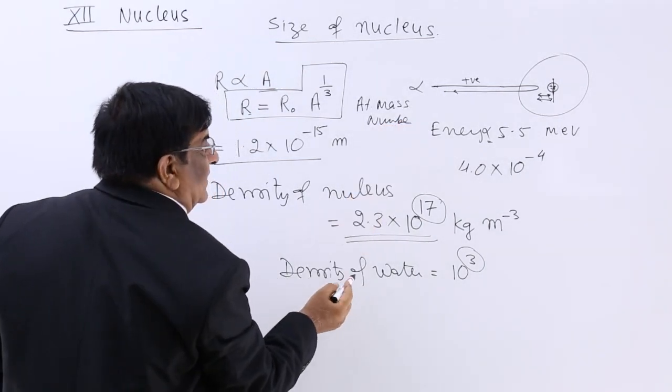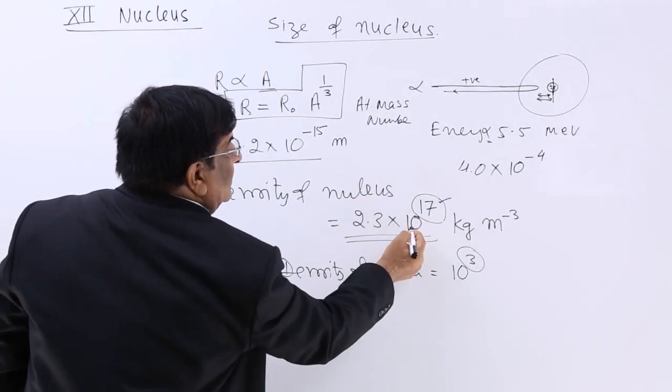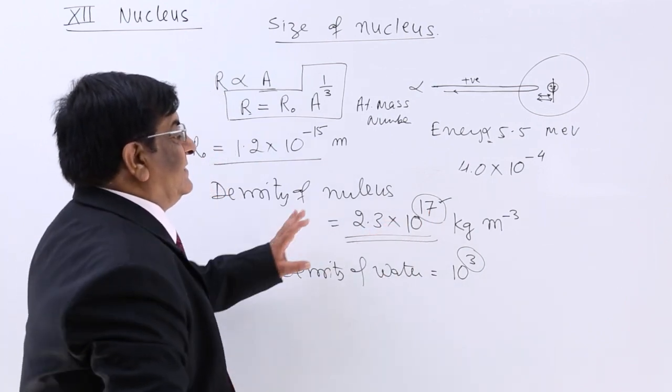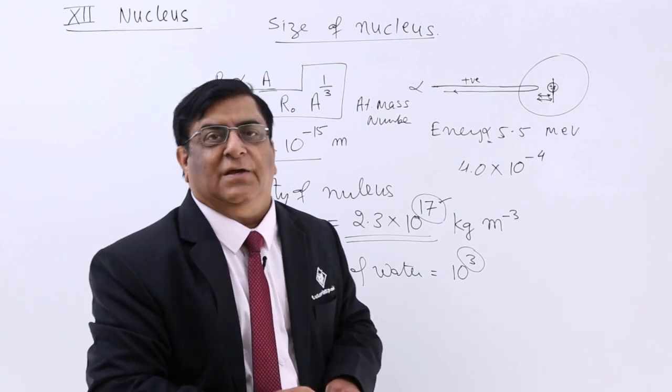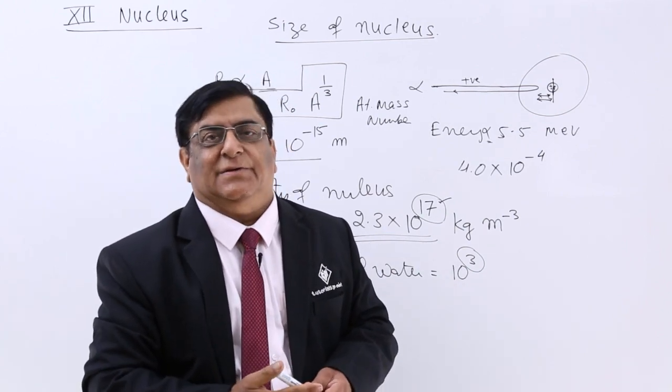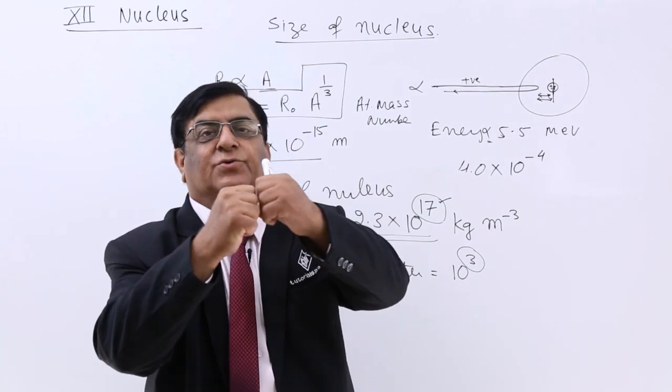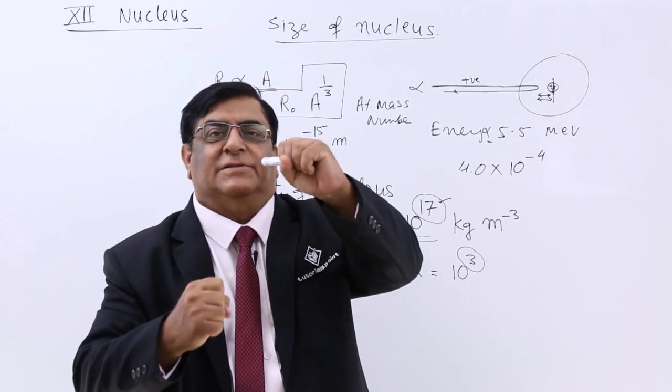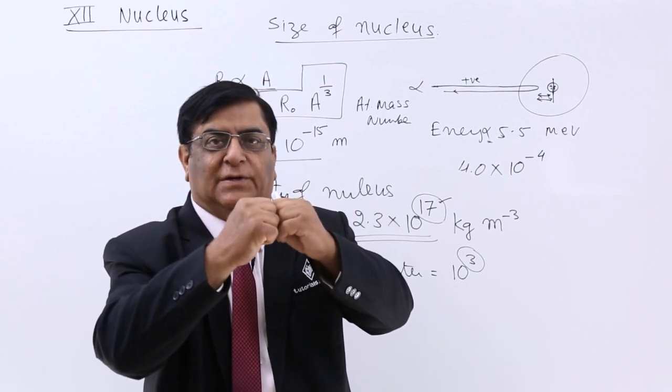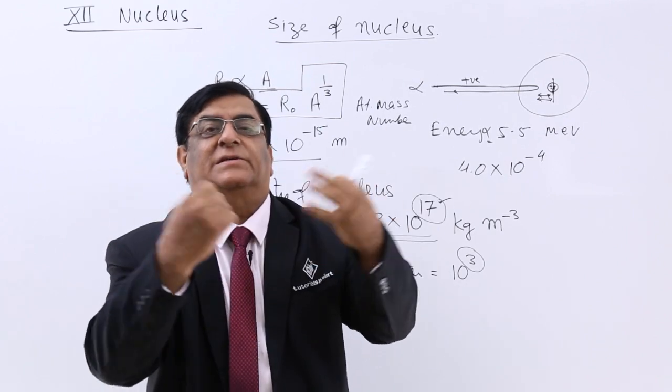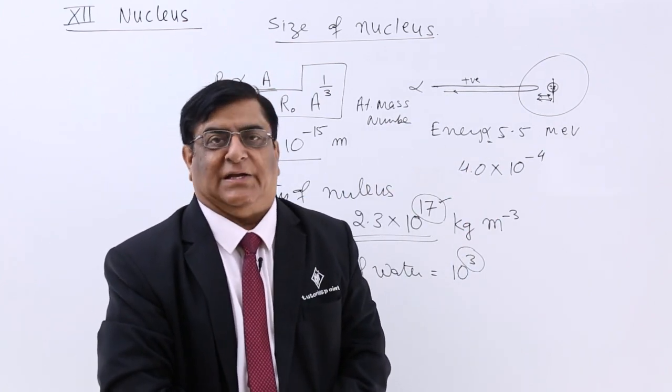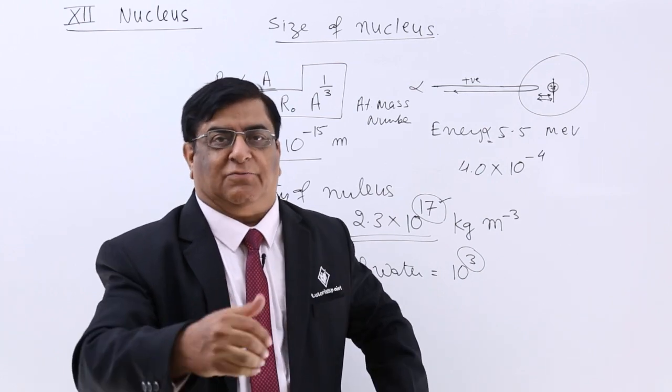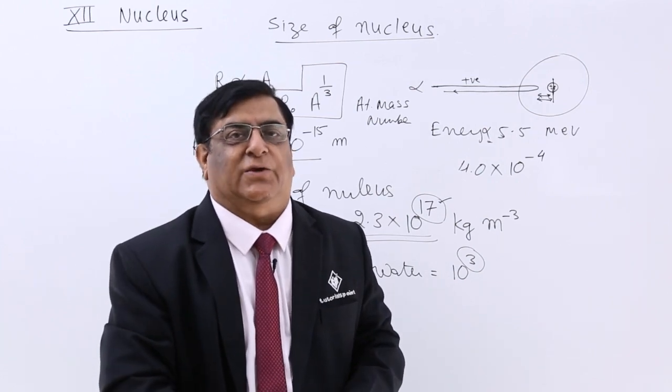And then density of the nucleus is very, very high. 10 to the power 17 is the order for that. Thank you. And now we will study the binding energy, why the nucleus particles should remain together. If it is a proton, there is a second proton, there is a repulsion. Why does it not move away? Why they remain together? And that is atomic energy which keeps them together. That we will study in the next lecture. Thank you.